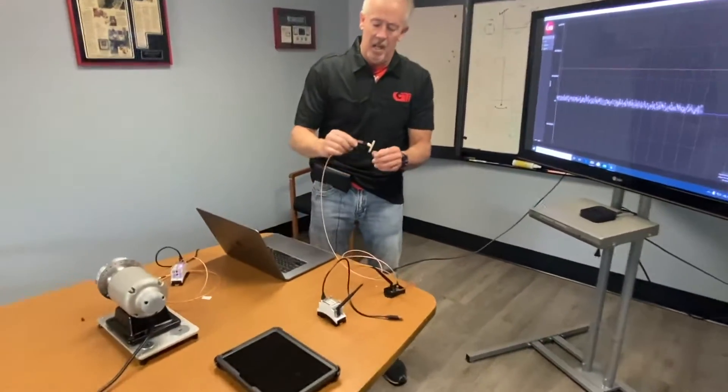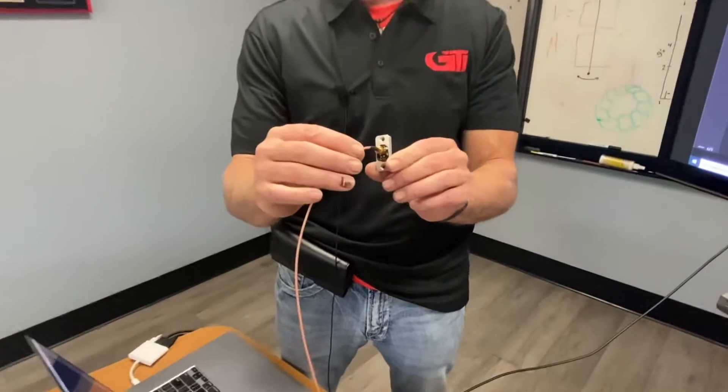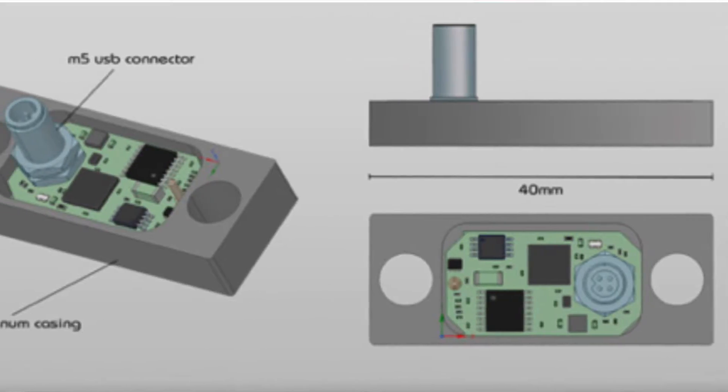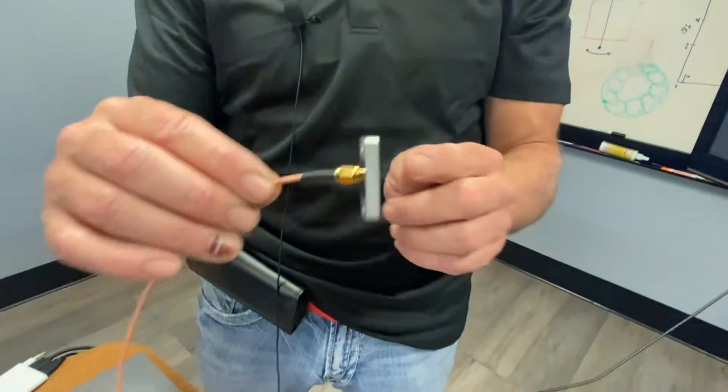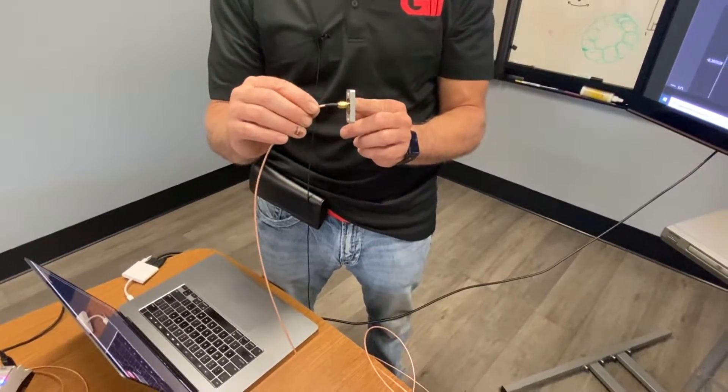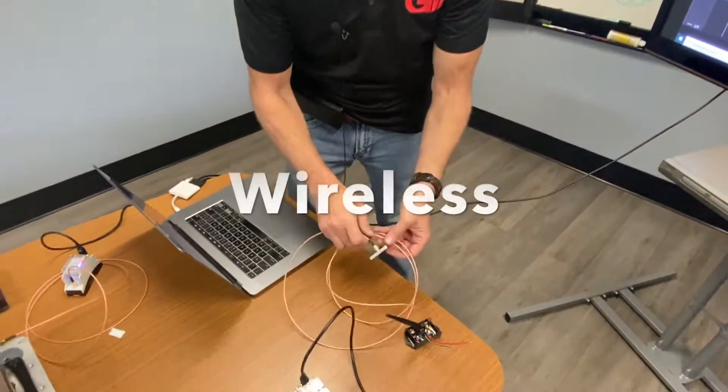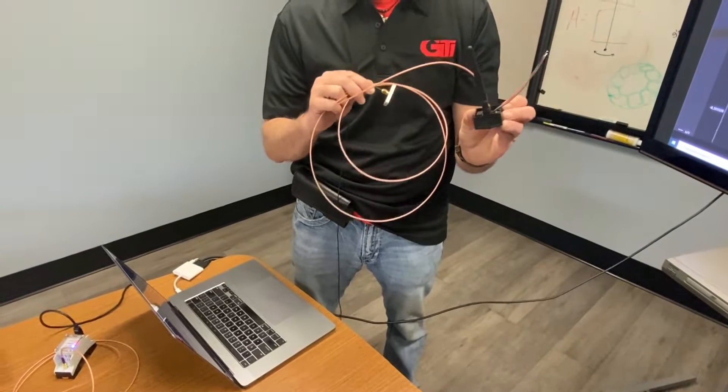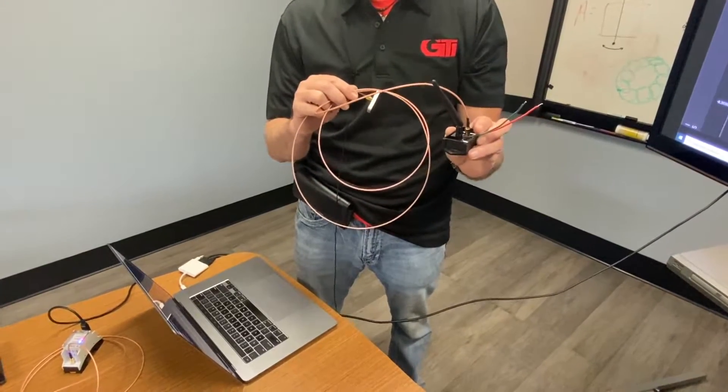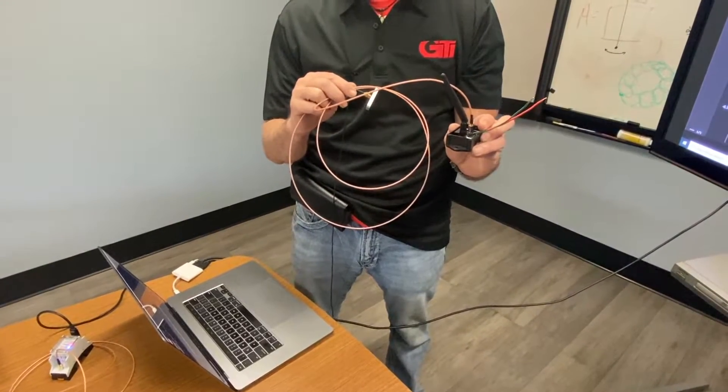We have a very tiny accelerometer for mounting to a spindle or any other asset, and believe it or not this is three axes and temperature out of this little module and it is wireless. It goes to a wireless transmitter power cell that just requires 12 or 24 volts from the machine.